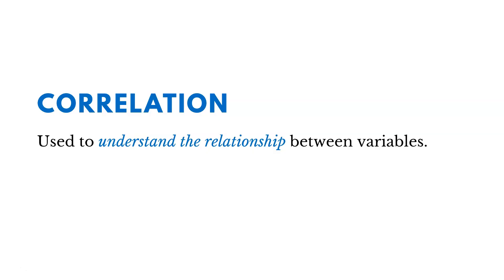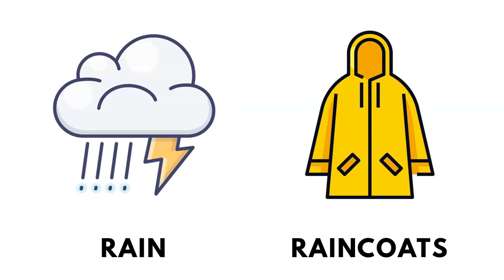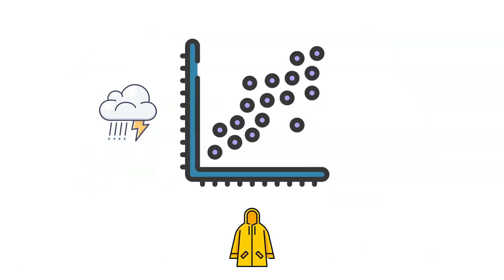Correlation is used to understand the relationship between variables. An example is maybe we want to understand the relationship between the amount of rain we receive and the number of raincoats that are sold. What you could do is measure those things for 20 or 30 days and then plot them out in a scatterplot like this.